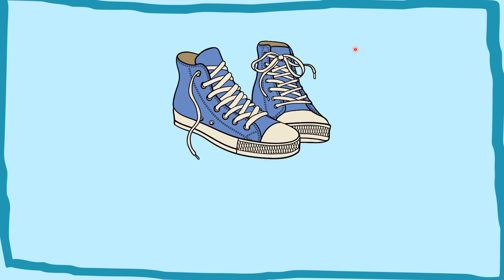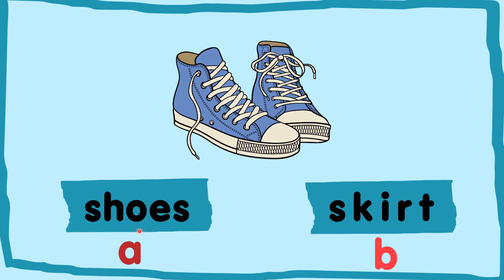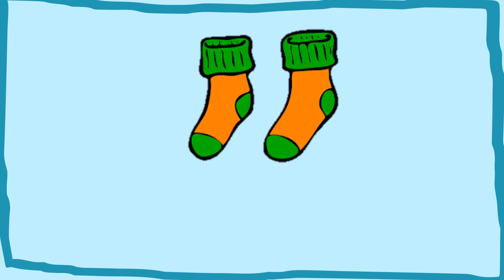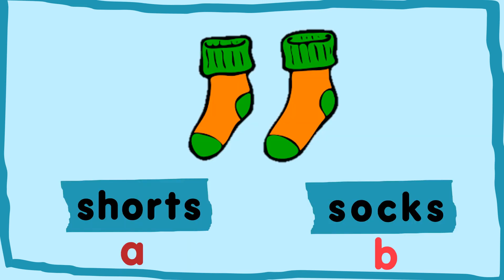Next we are going to look at the picture and choose the correct answer. Shoes. Skirt. Which one is socks? A or B? Shorts. Which one is socks? A or B? You are right. The correct answer is B.